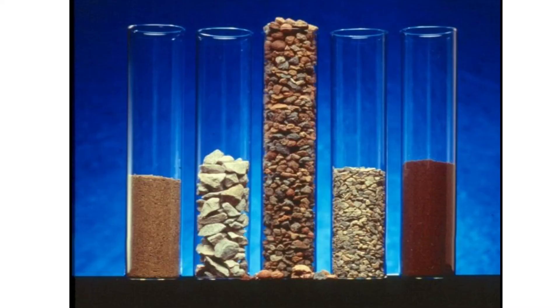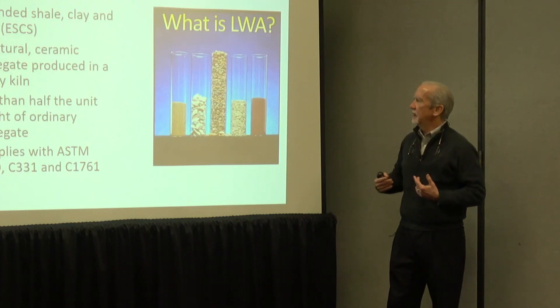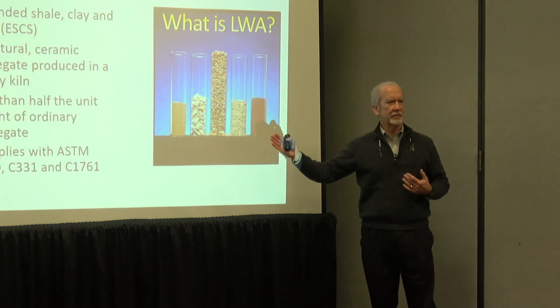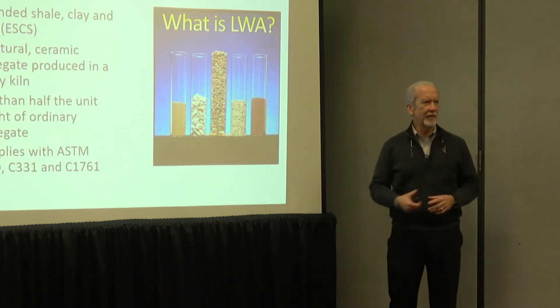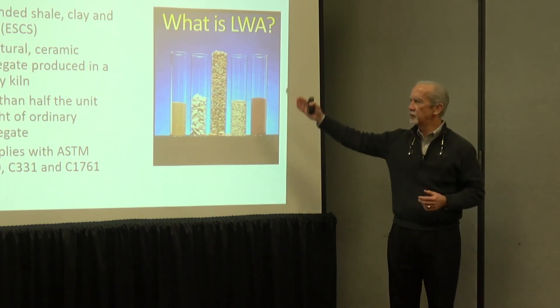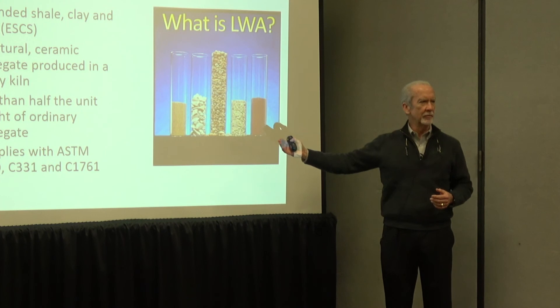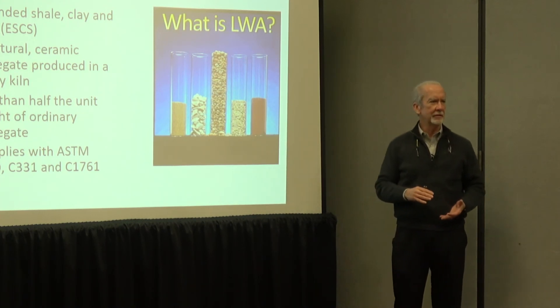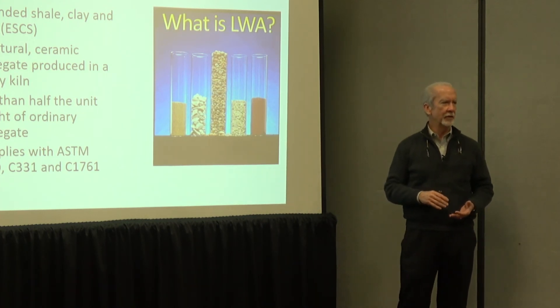There's an equal weight of material in each one of these cylinders. The other four cylinders are normal weight materials — what they call normal weight materials, I call them ordinary materials. The center cylinder is the composite sample of lightweight aggregate. You can see that you get more than twice the volume for the given amount of weight of aggregate.